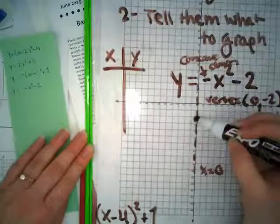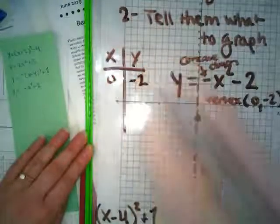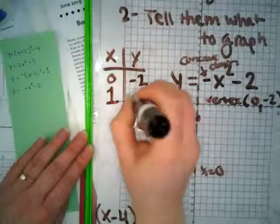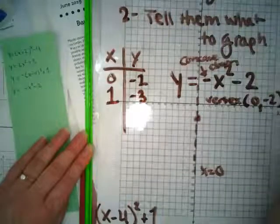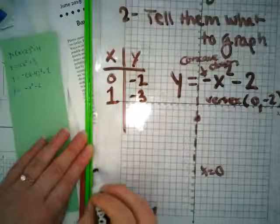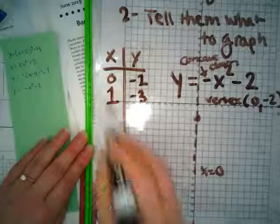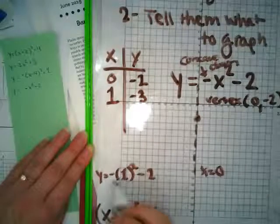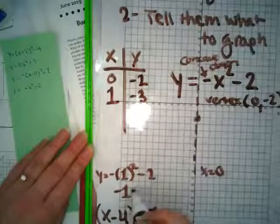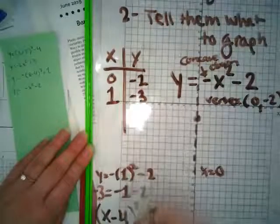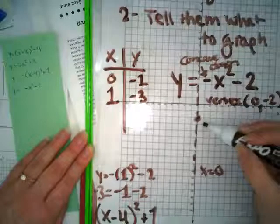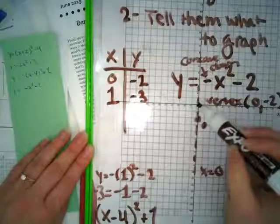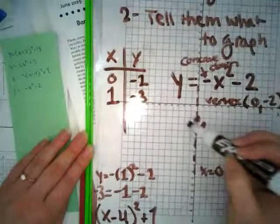So I'm going to plug in, I already know when x is equal to 0, I get negative 2. What happens when x is equal to 1? I'm going to get negative 3. It's okay. So y is equal to negative times my x value of 1 squared minus 2. 1 squared is 1, 1 times negative 1 is negative 1, minus 2 is equal to negative 3. So now I can plot that, 1 comma negative 3. And because this is my axis of symmetry, x equals 0, I can plot negative 1, negative 3 on the other side.